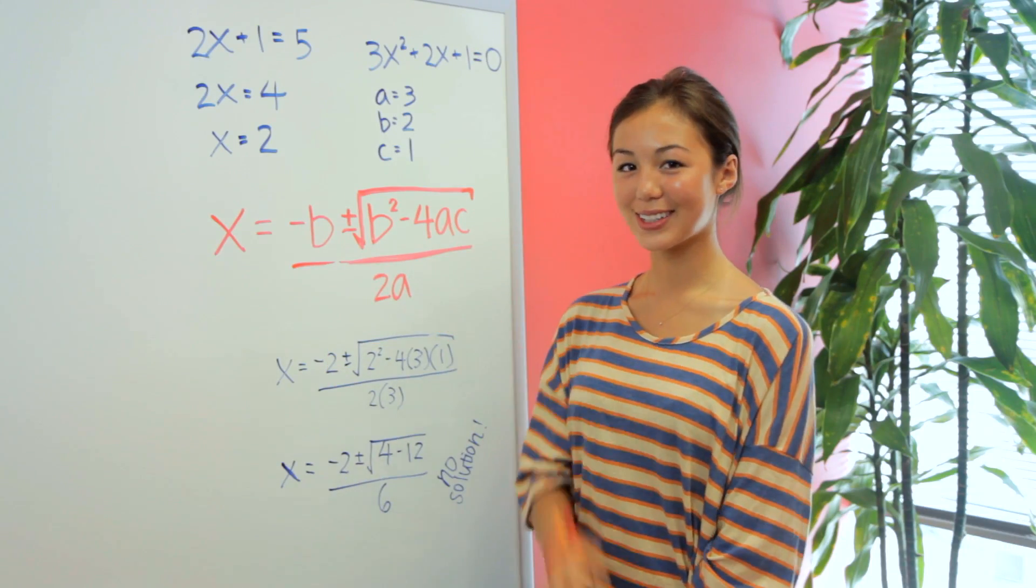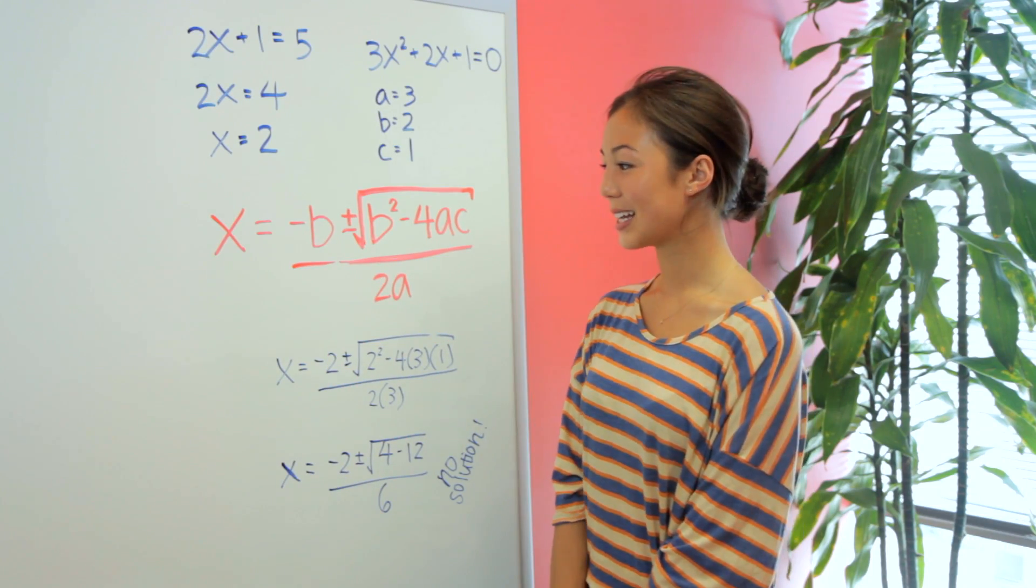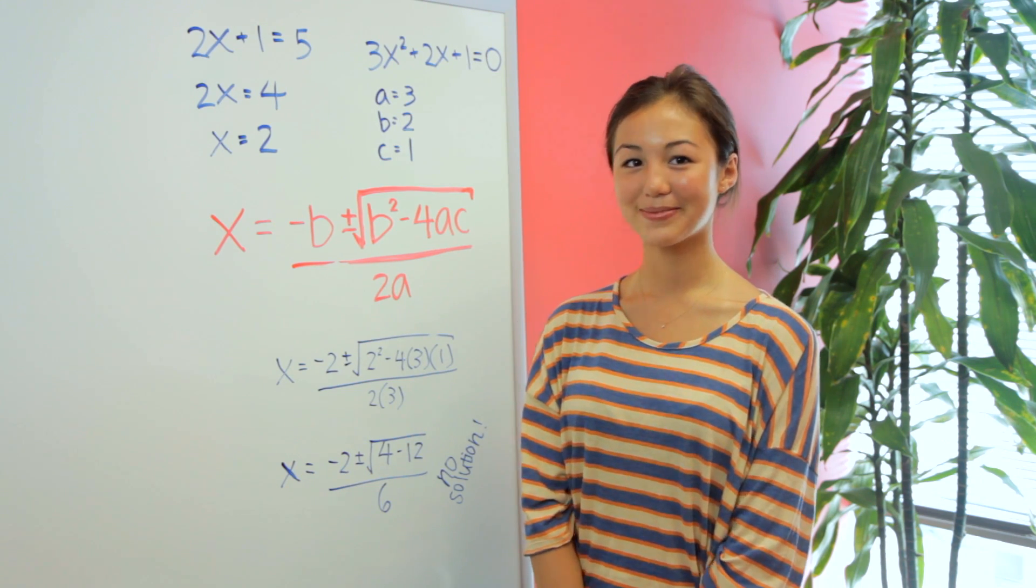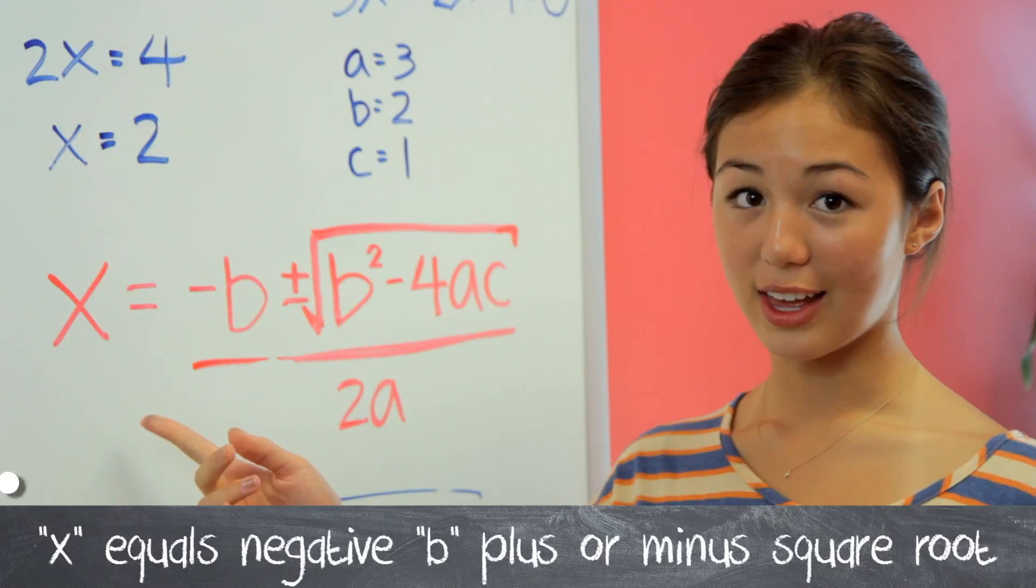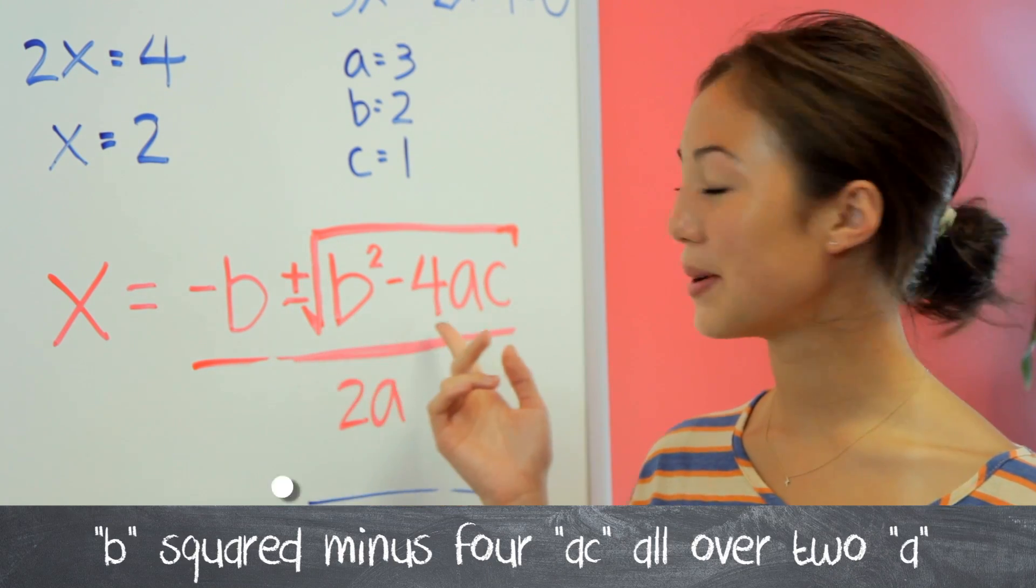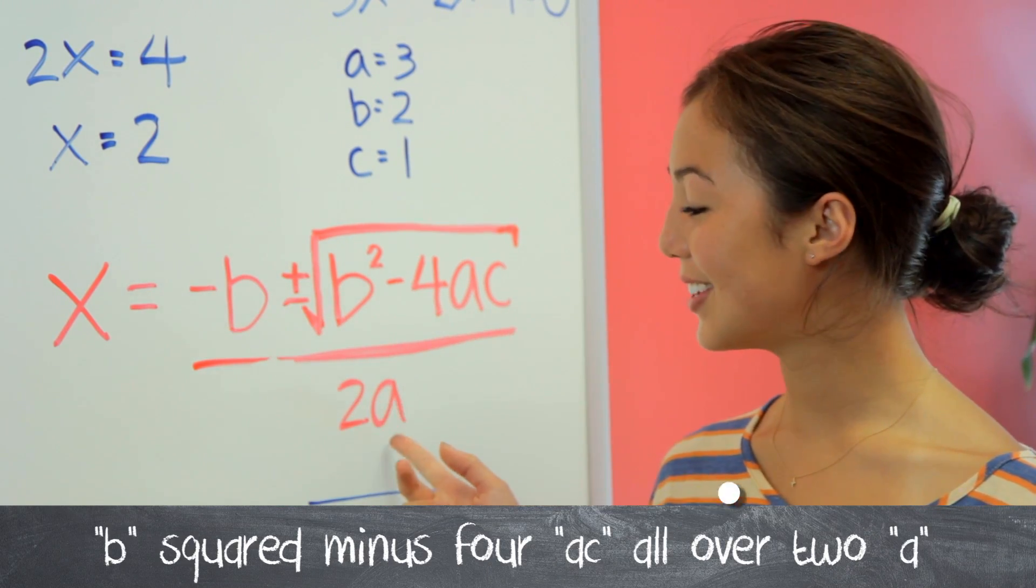Here I've written the quadratic equation, and it can be easily remembered by a simple song that goes to Pop Goes the Weasel. Please excuse my singing voice. x equals negative b plus or minus square root b squared minus 4ac over 2a.